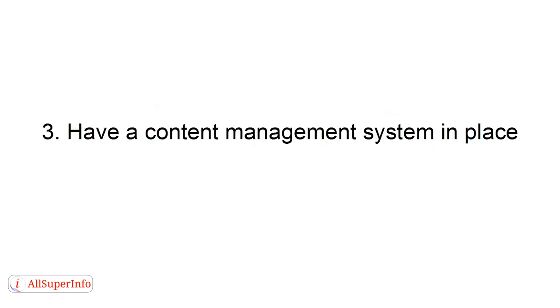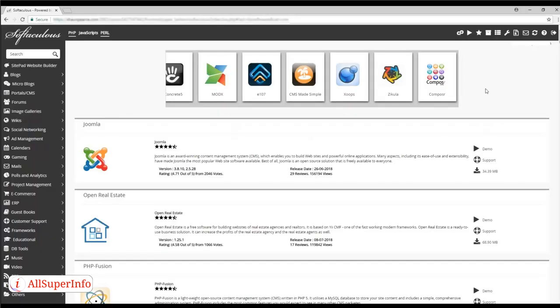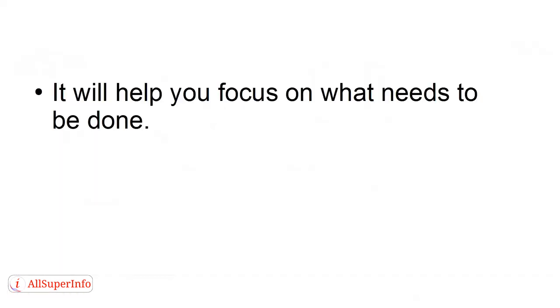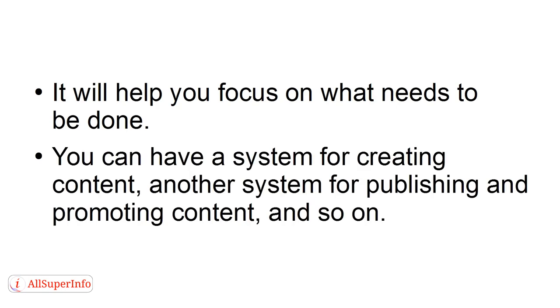Step 3: Have a Content Management System in Place. A good content marketing strategy involves a solid plan. Having a system in place will help you achieve your goals much faster. It will help you focus on what needs to be done. You can have a system for creating content, another system for publishing and promoting content, and so on.